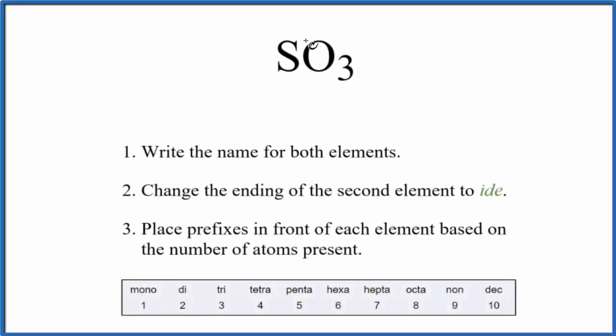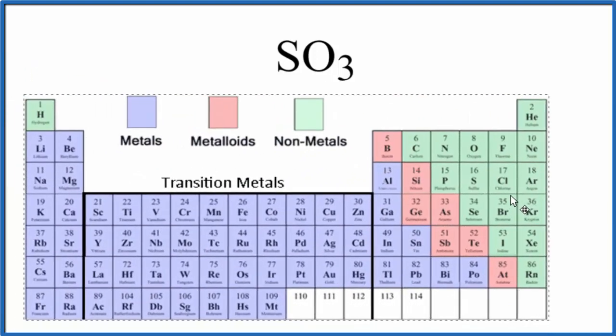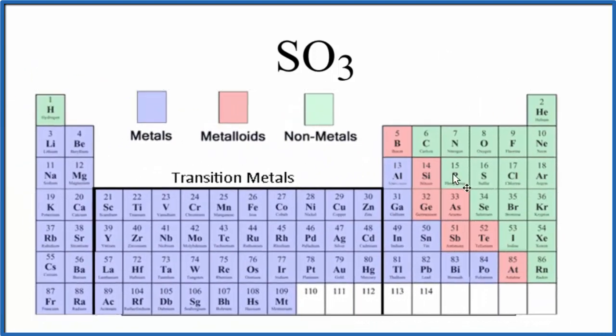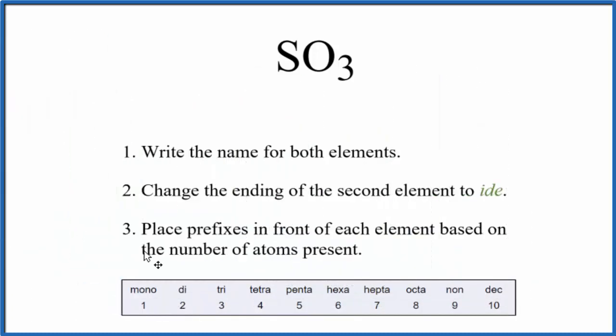To write the formula for SO3, first we need to recognize that it's a covalent compound, also called a molecular compound. We have sulfur right there, and then oxygen. These are both nonmetals, so when we have nonmetals bonded together, that's a covalent or molecular compound, and we need to use these prefixes down here when we write the name.